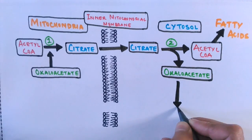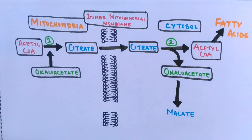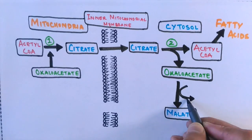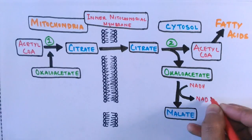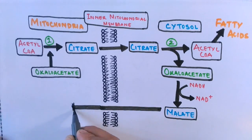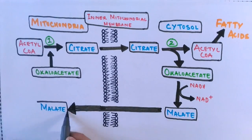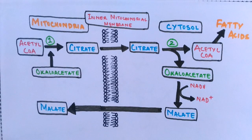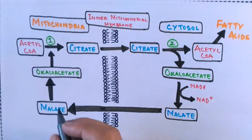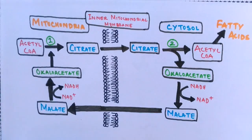First, oxaloacetate is reduced to malate by the reducing agent NADH. Once reduced, malate is able to transport into the mitochondrial matrix. This is the exchange: a citrate molecule exits in exchange for a malate molecule entering. Inside the matrix, malate is oxidized back to oxaloacetate by the oxidizing agent NAD+, and the oxaloacetate again combines with acetyl coenzyme A, allowing the cycle to continue.